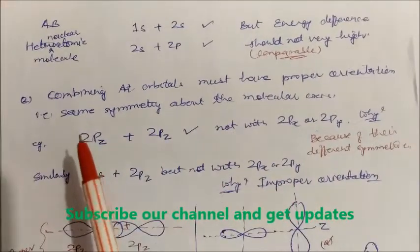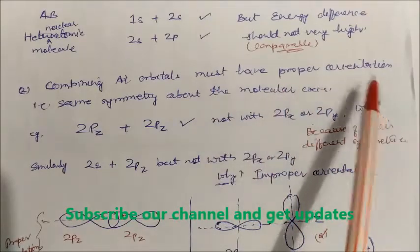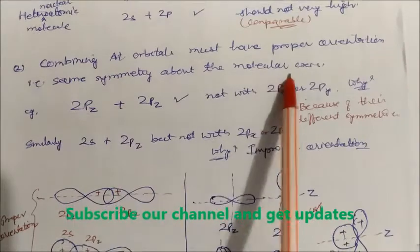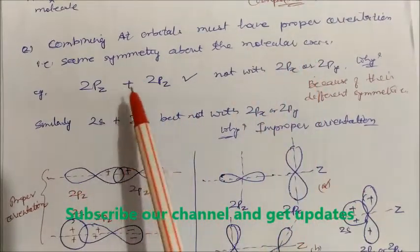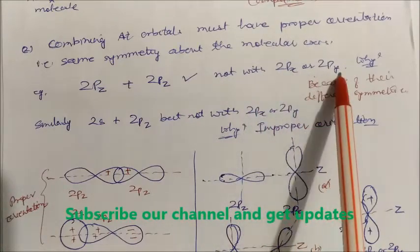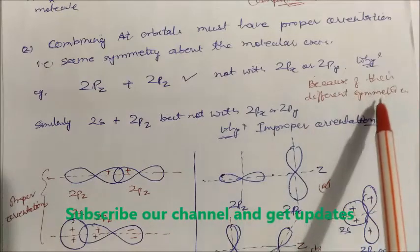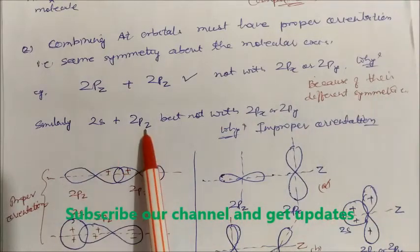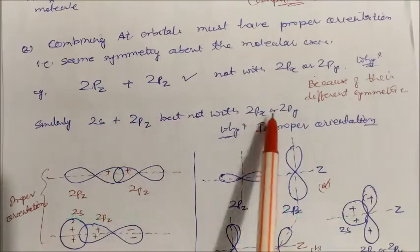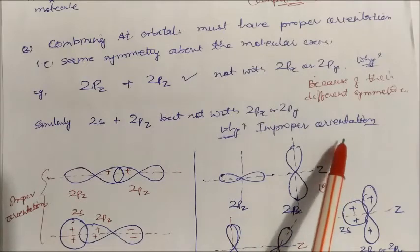The second condition is that combining atomic orbitals must have proper orientation, meaning they have the same symmetry about the molecular axis. For example, 2pz and 2pz will combine, but 2pz will not combine with 2px or 2py because of their difference in symmetry. Similarly, 2s and 2pz combination is possible, but 2s does not mix with 2px or 2py because they have improper orientation.